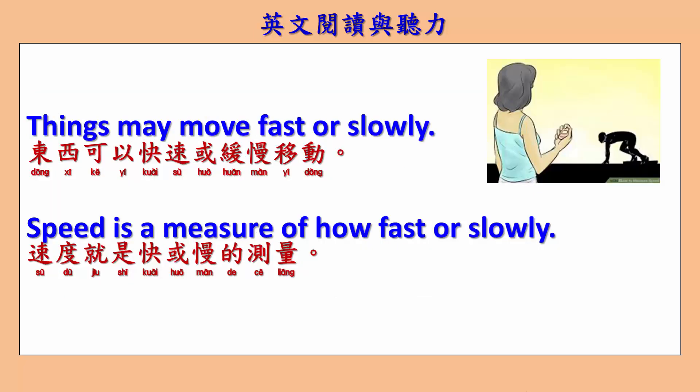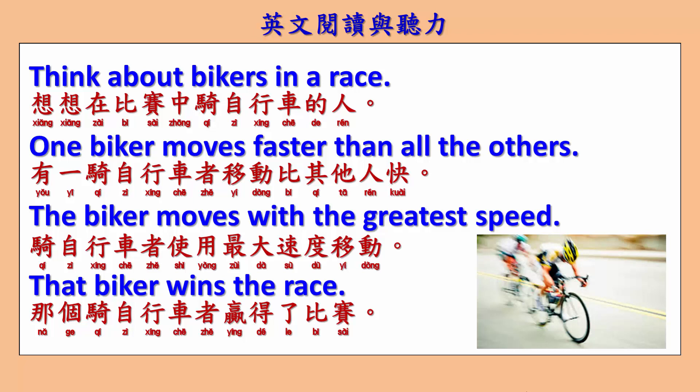Things may move fast or slowly. Speed is a measure of how fast or slowly something moves. Think about bikers in a race. One biker moves faster than all the others. The biker moves with the greatest speed. That biker wins the race.